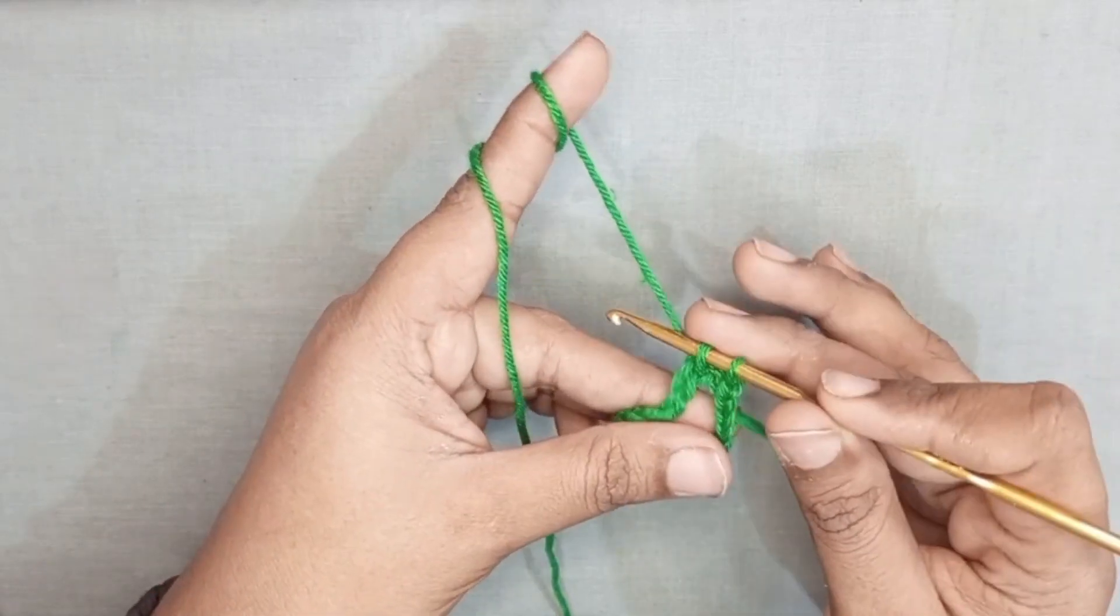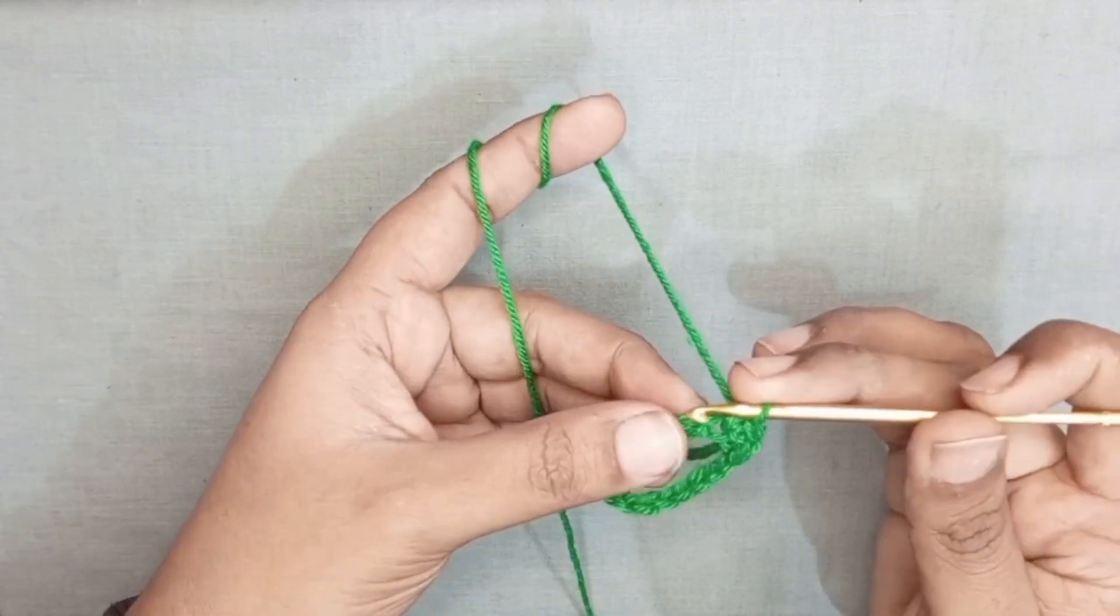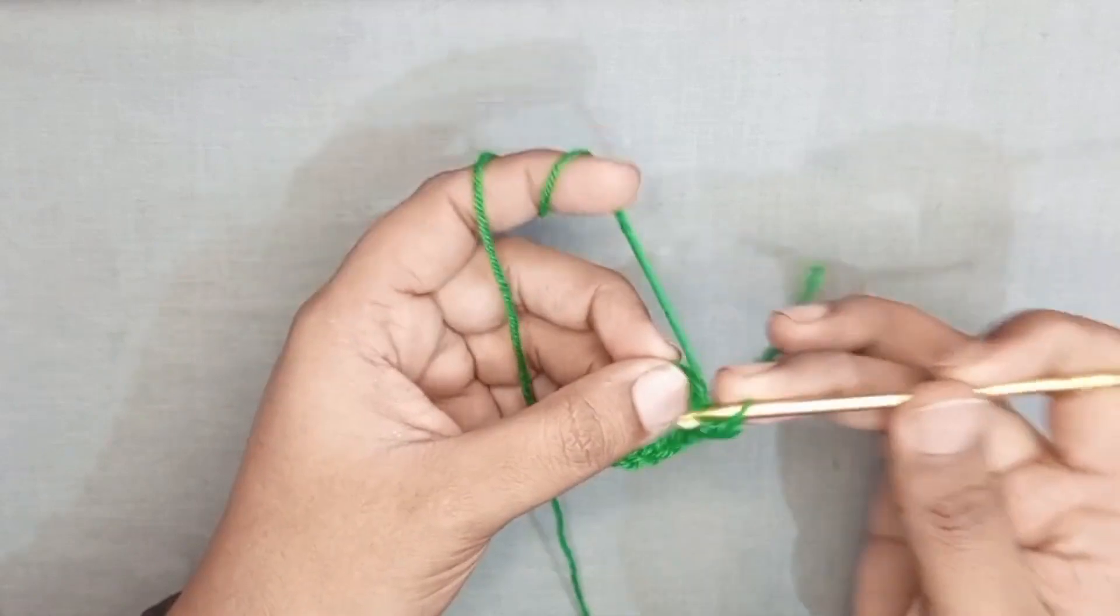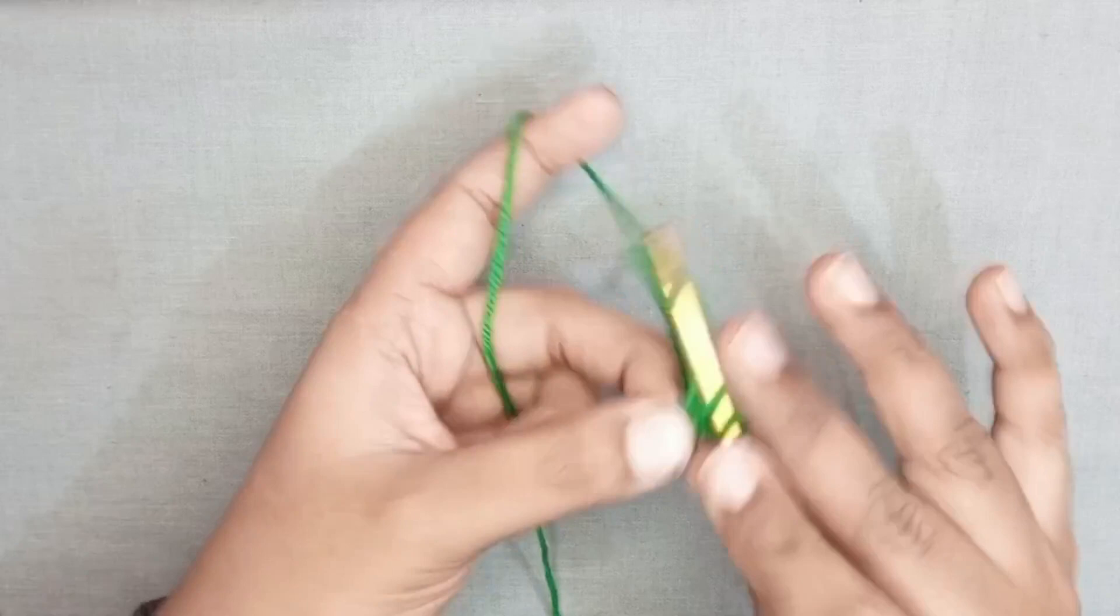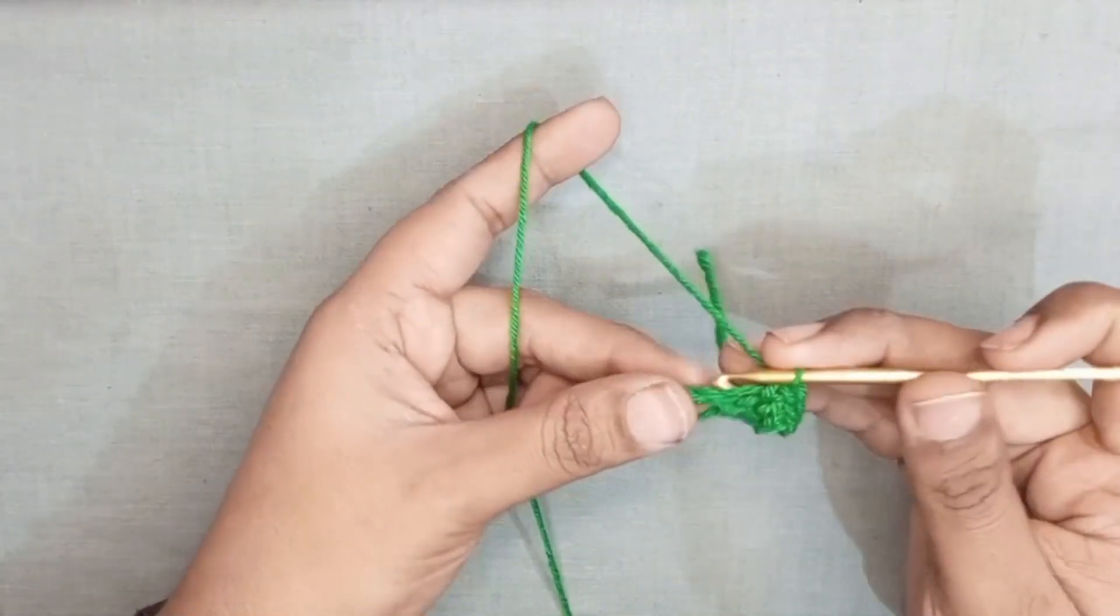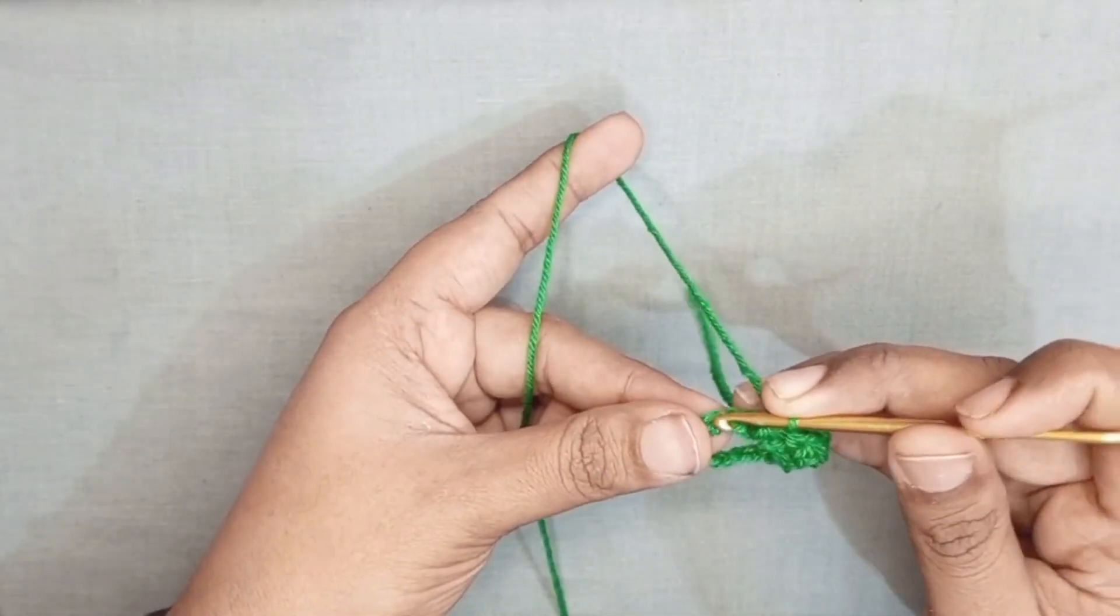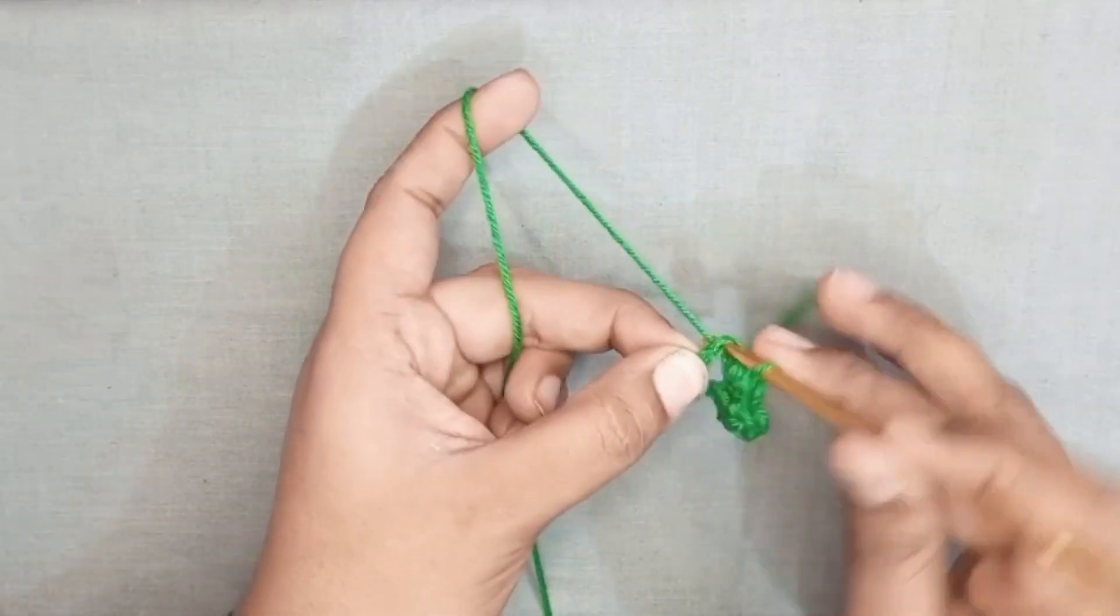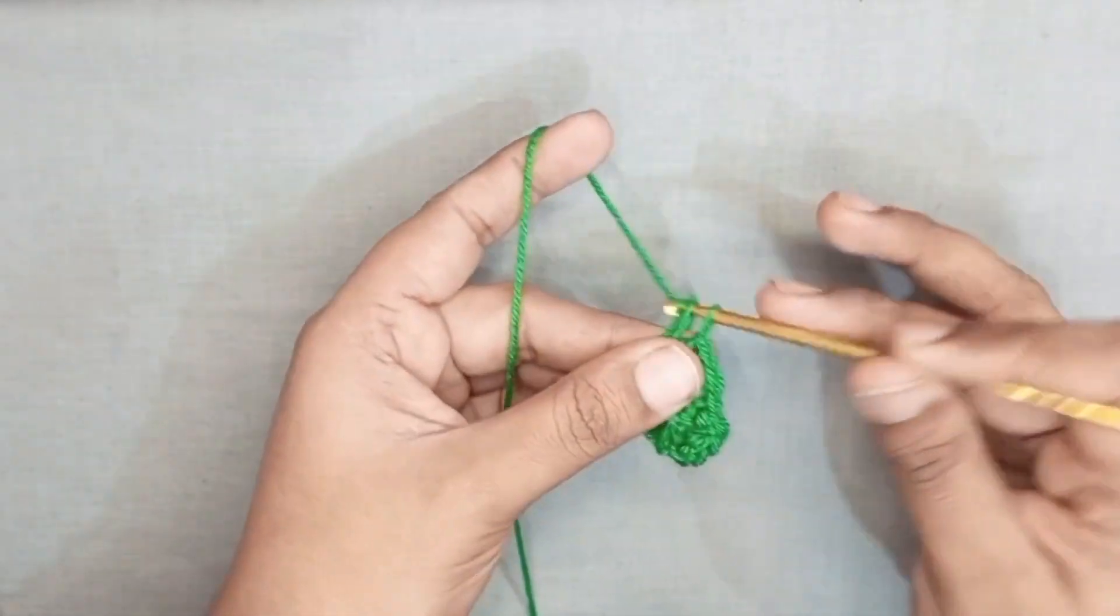Next chain we make our single crochet. We make total 9 single crochet in next 9 stitches: 1, 2, 3, 4, 5, 6, 7, 8, 9.